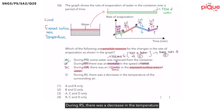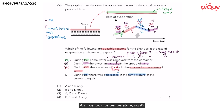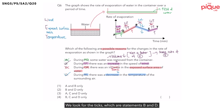Next, statement D: during RS, there was a decrease in the temperature of the surrounding air. The factor here is temperature, and there was a decrease — so we look for a downward arrow. Where is RS on the graph? Looking at temperature for that segment — is there a downward arrow? Yes. So statement D is correct. Since we are finding possible reasons, we look for the ticks: statements B and D. Therefore the answer is option 2.